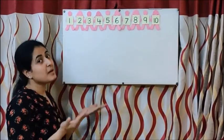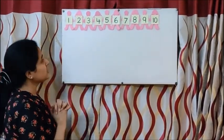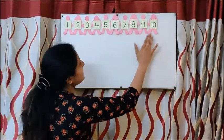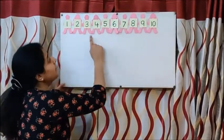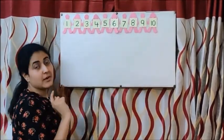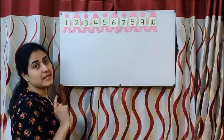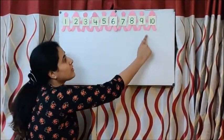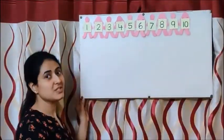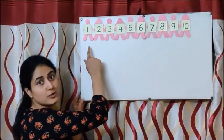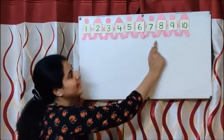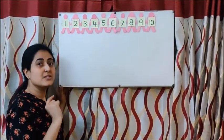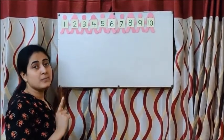Children, this is our number line. This is called a number line because we have placed all the numbers in order. So this is your number order. You can also make a number line like this at home. I will sing the poem with it.